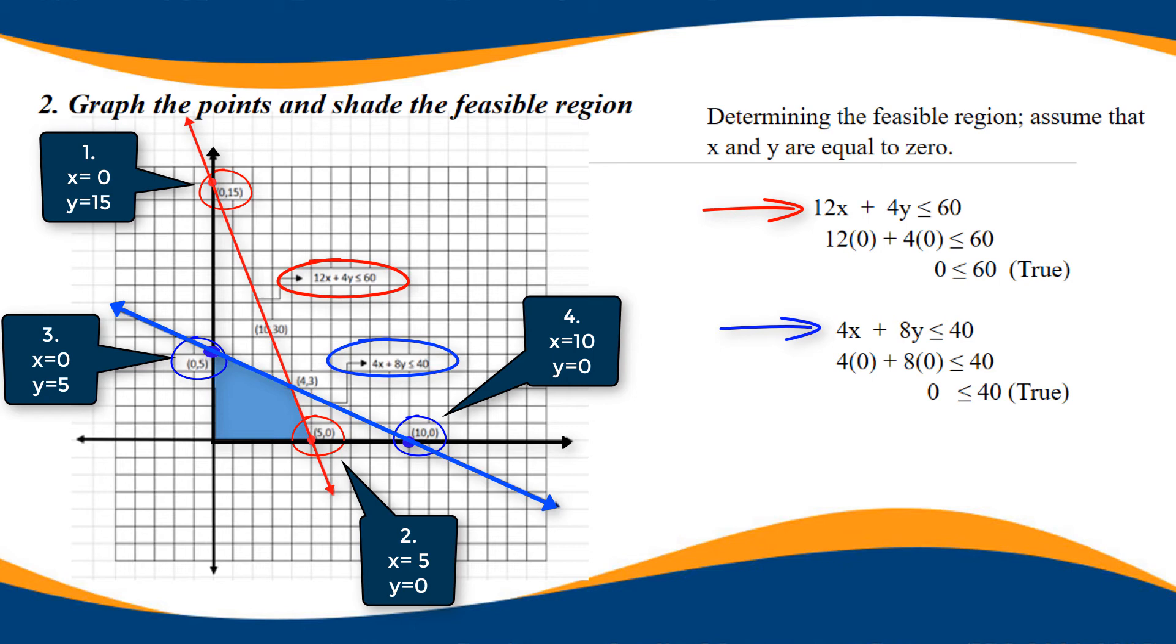Since both are less than or equal to, we check if it's true. When it's true, the direction of the shade is going towards 0. We have three vertices. You can see there is a point of intersection between the two lines, the red and the blue. There is a point of intersection.